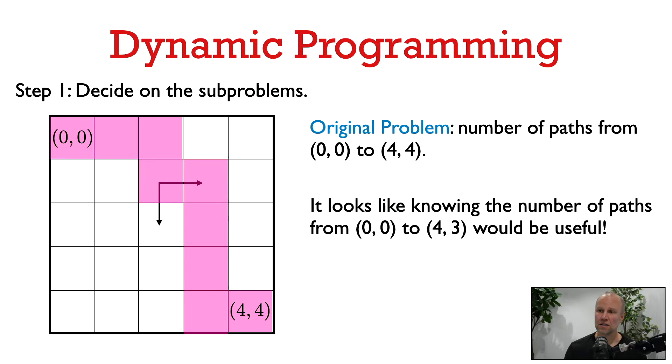In this case, something similar to our original problem that seems useful: if we want to know the number of paths from 0,0 to 4,4, it seems useful if we knew the number of paths from 0,0 to 4,3. Because every path from 0,0 to 4,3 — we could just take one more step and arrive at 4,4. So that seems like a pretty good choice of subproblem.